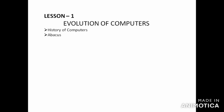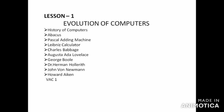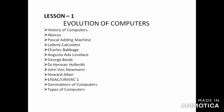We have to study about the Abacus, Pascal Adding Machine, Leibniz Calculator, Charles Babbage, Augusta Ada Lovelace, George Boole, Herman Hollerith, John von Neumann, Howard Aiken, ENIAC, and UNIVAC — the first general-purpose computer. Then we will study about the generations of computers and the types of computers. These are the topics for lesson number one: Evolution of Computers.